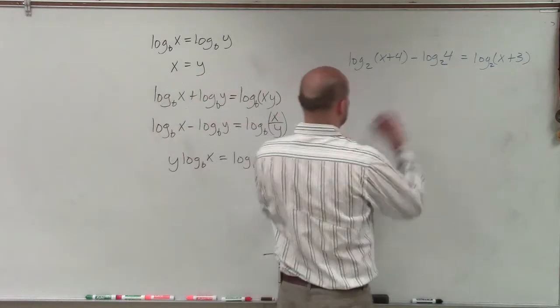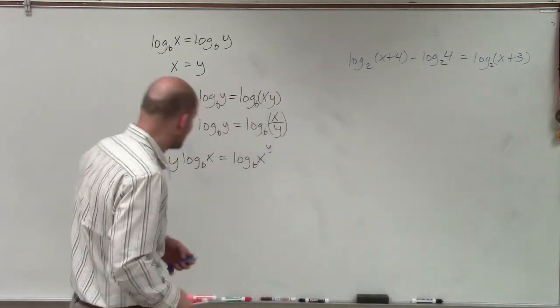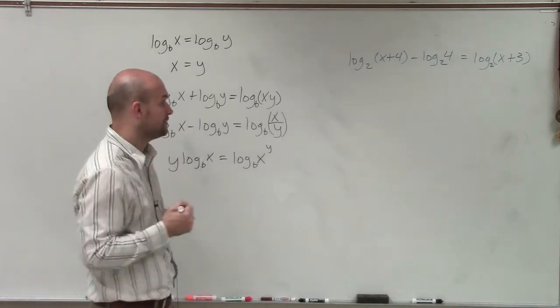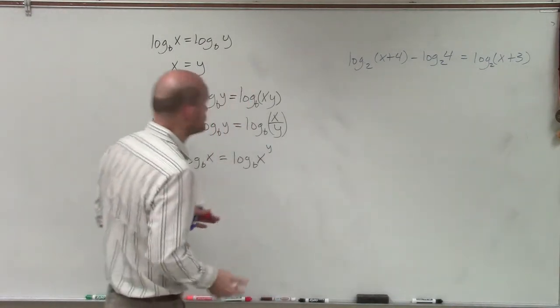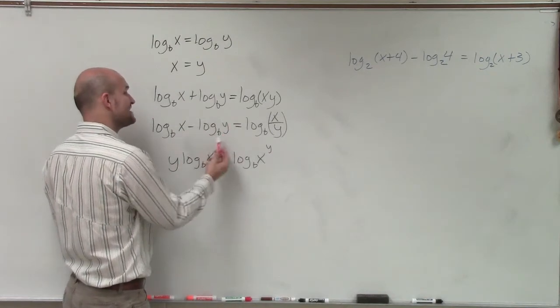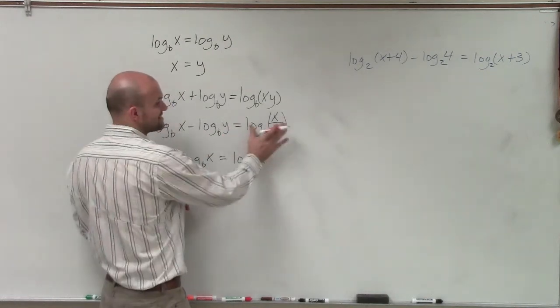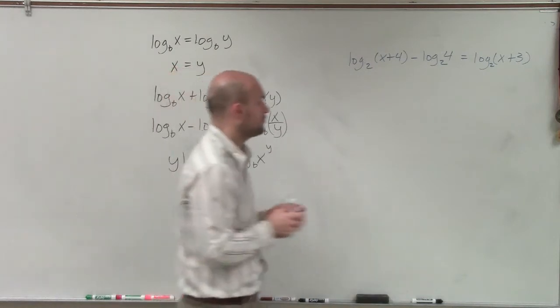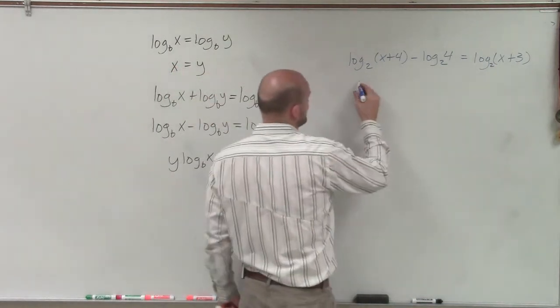So in solving a logarithmic equation, we're going to have a couple properties we're going to work on. The first one is going to be our quotient rule of our logarithm, which states that when we have a logarithm subtracted from another logarithm with the same base, we can rewrite that as the quotient of what we're evaluating for in one single logarithm.